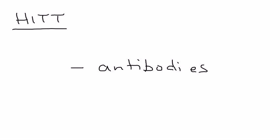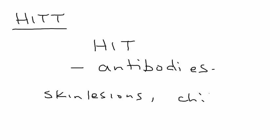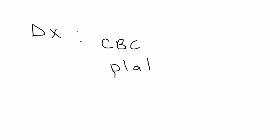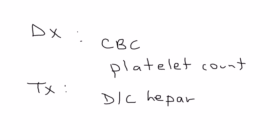This thrombosis can cause severe problems and life-threatening occlusion if not treated in time. The reason HIT happens is because antibodies develop — called HIT antibodies — and these are responsible for the thrombocytopenia and thrombosis. In addition to the low platelet count, you can also see skin lesions and systemic reactions such as chills and fever. Diagnosis is by CBC and platelet count, and treatment is to discontinue heparin and give an alternative anticoagulant.